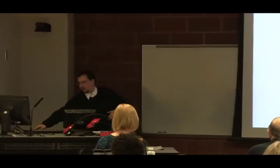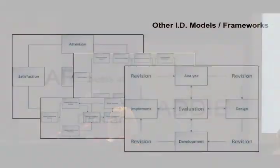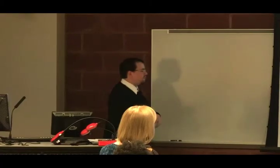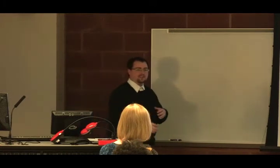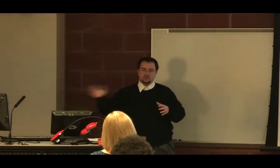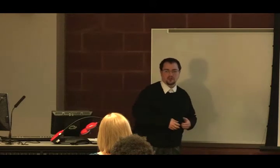We have all kinds of instructional design models. We have ARCs, we have SEALs in Glasgow, we have Dick and Kerry, we have the general ADDIE model. There are all these choices out there, and so it's almost a paradox of choice. How do we have all these choices? Are there too many, or is it better to narrow it down to a few?